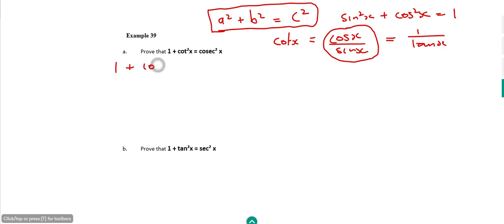So if we square both of these, then to square the numerator there, we've got cos squared x.